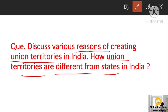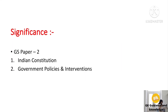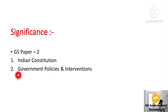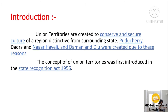We need to understand the significance of the question. This question can be asked in GS Paper 2 under the headings of Indian Constitution and Government Policies and Interventions. Our introduction would be: union territories are created to conserve and secure the culture of a region distinctive from surrounding states, like Puducherry, Dadra and Nagar Haveli, and Daman and Diu.